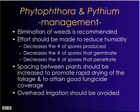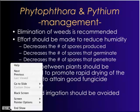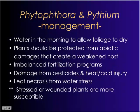Overhead irrigation should be avoided — it increases humidity, increases moisture on the leaf surface, and becomes more favorable for infection, while also spreading these pathogens. Using micro-jet or drip irrigation is the best-case scenario. If using overhead irrigation, water in the morning to allow the foliage to dry. You definitely don't want to water late in the day, because wet plants in the evening are highly favorable for disease.